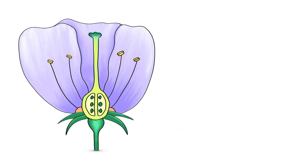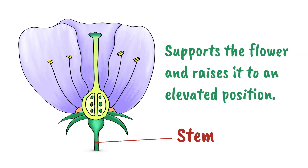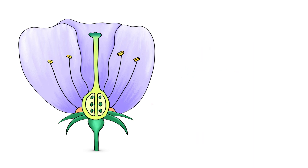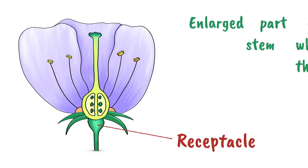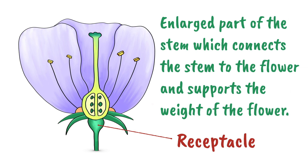There are a few other parts that are relevant. There's the stem, which supports the flower and raises it to an elevated position, making the flowers more accessible to insects. The receptacle is an enlarged part of the stem which connects the stem to the flower and supports the weight of the flower.